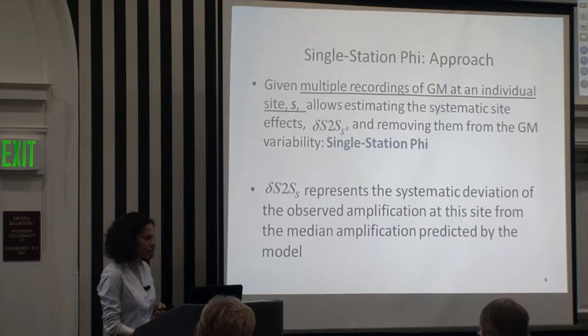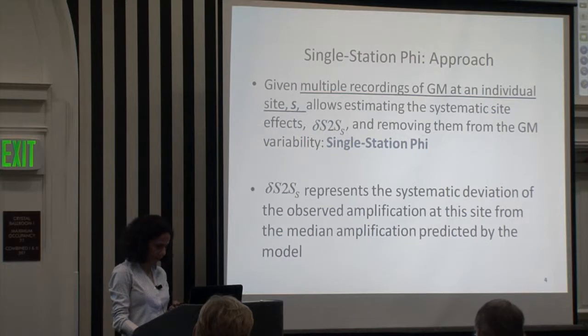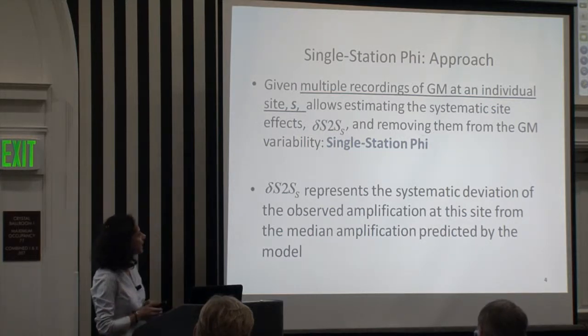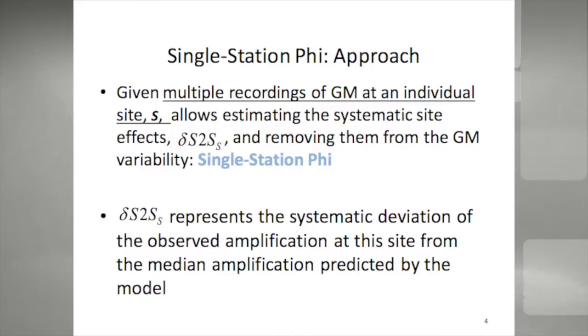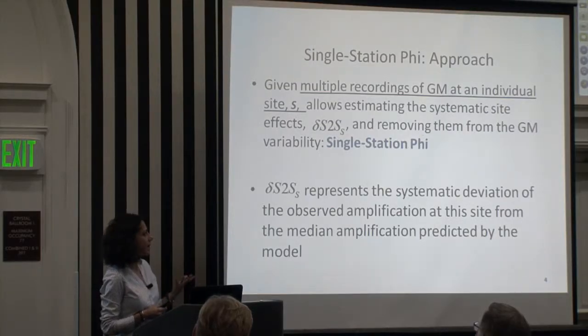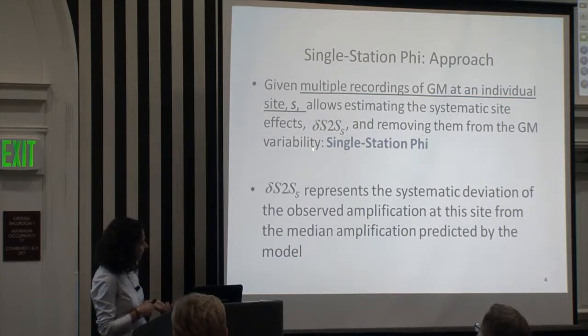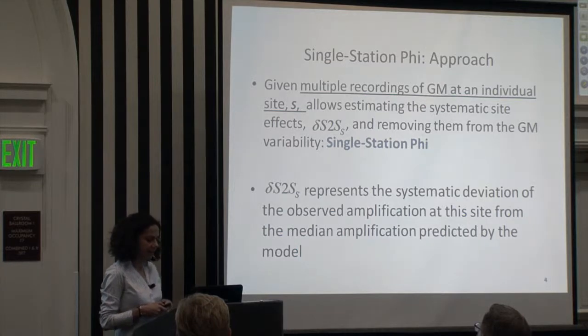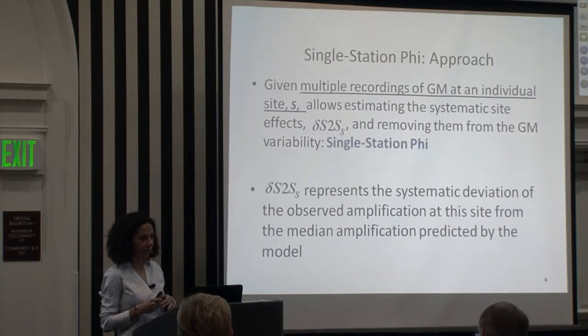When we talk about partially removing the ergodic assumption, what we basically mean is: if we have enough recordings at an individual station, we can estimate the systematic site effects and remove them from the within-event residual, and this way we get to single-station phi. The delta S-to-S term that we estimate represents the systematic deviation of the observed amplification at this site from the median amplification predicted by the model.